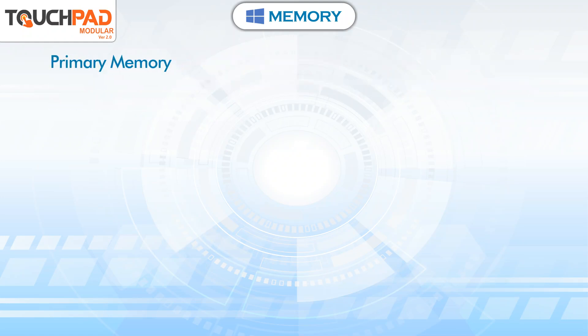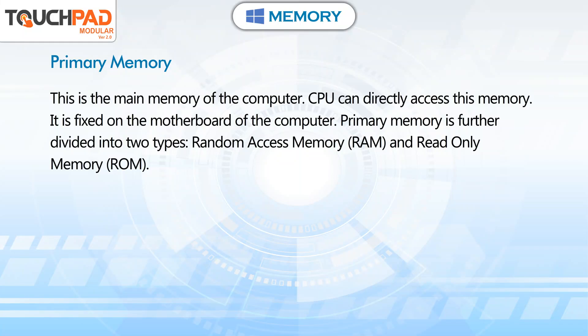Primary memory. This is the main memory of the computer. CPU can directly access this memory. It is fixed on the motherboard of the computer. Primary memory is further divided into two types: Random Access Memory (RAM) and Read-Only Memory (ROM).